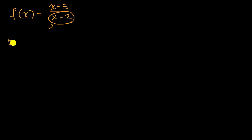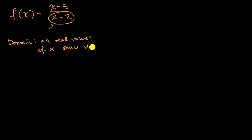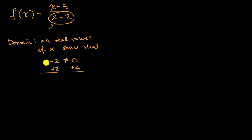And so we can say the domain is all real values of x such that x minus two does not equal zero. Typically, people would simplify this so that we just have an x on the left-hand side. If we add two to both sides, x minus two not equaling zero is the same thing as x not equaling two. If you wanted to keep x minus two from being zero, x just can't be equal to two. So the domain here is all real values of x such that x does not equal two.